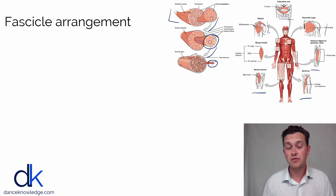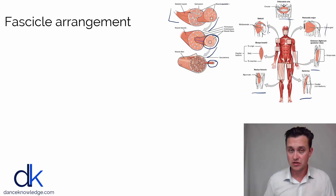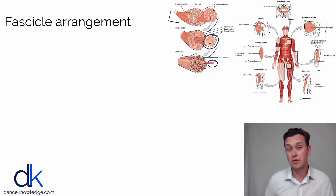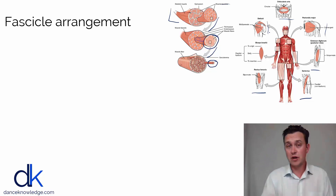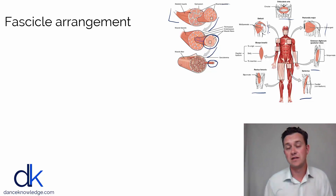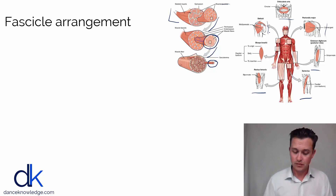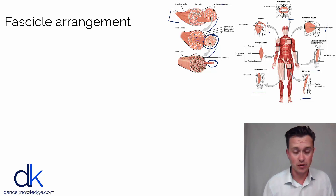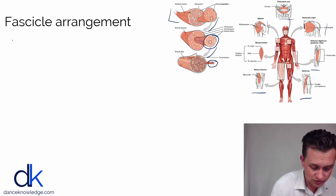These shapes really affect the way that the muscle can produce force. Some muscles are fast, some are slow, some are strong, some are not so strong. So in this lecture we're going to look at the concept of how the muscle arrangement — or fascicle arrangement — affects the way that the muscle can produce force and behave. The first concept we're going to look at is fascicles in series.